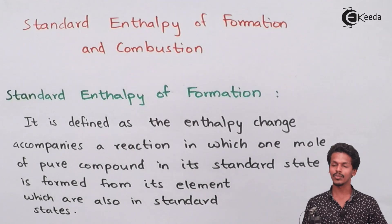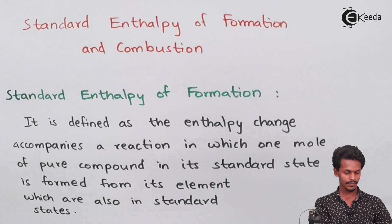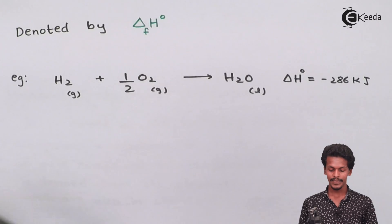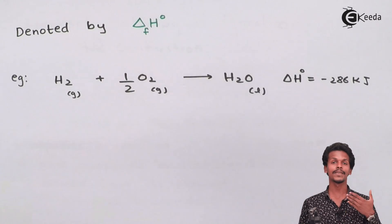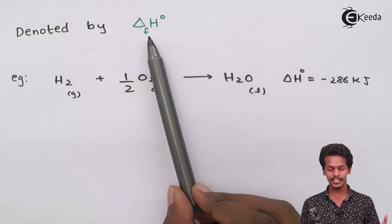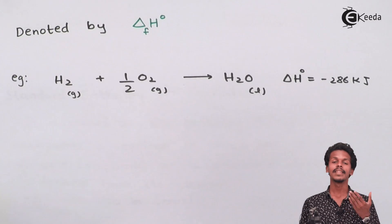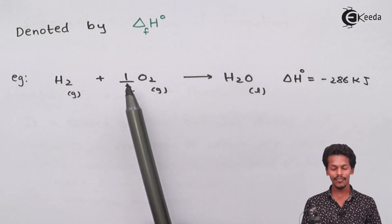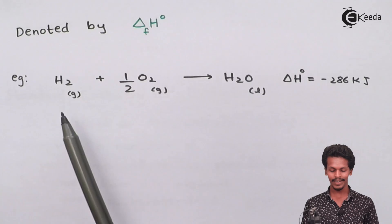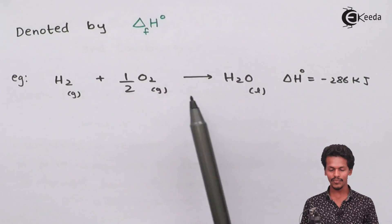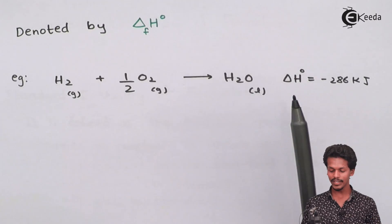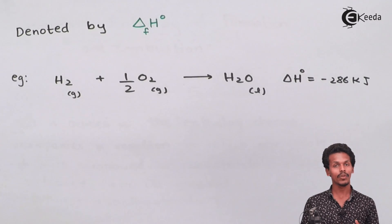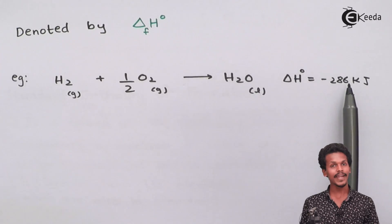Let me give a small example so you can understand in a better way. It is denoted by ΔH°f — where H° stands for standard and the subscript F stands for formation. So this is the standard enthalpy of formation. The example shows H₂ + ½O₂ → H₂O, where the physical states of the reactants and products are also mentioned. The standard enthalpy change for this reaction is found to be minus 286 kJ.